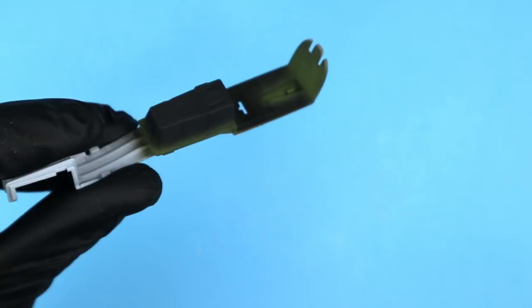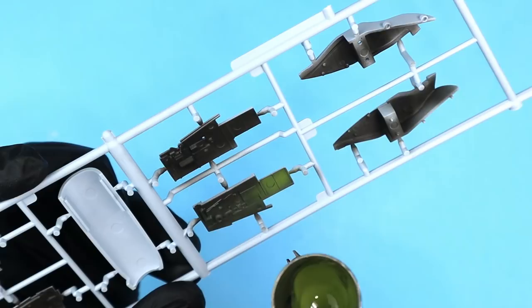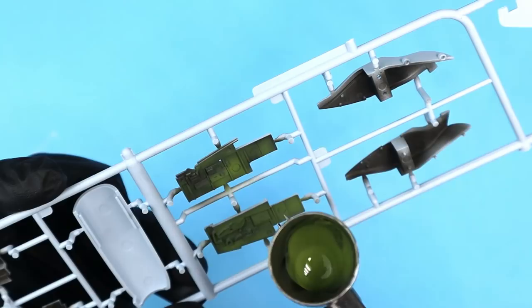I didn't spray the cockpit floor as this was wood in the real plane so we'll create that effect after I get the interior green down. I focus the green on the center and high spots and allow some of the dark to show through in the recessed or lower areas.